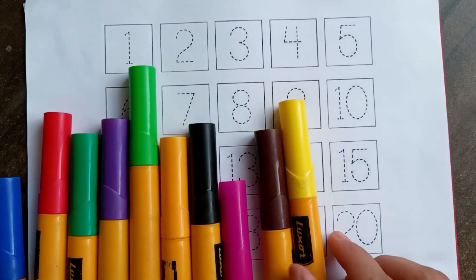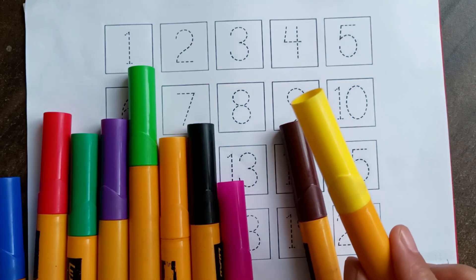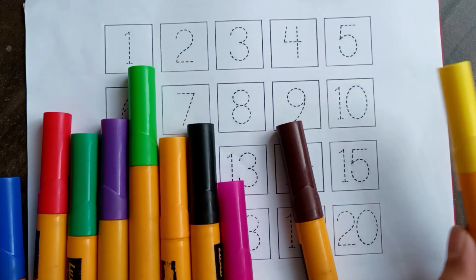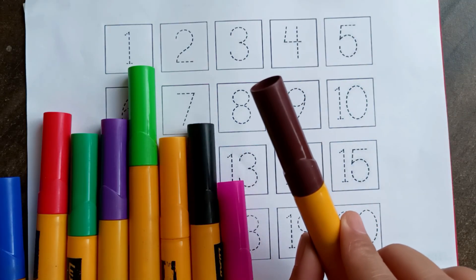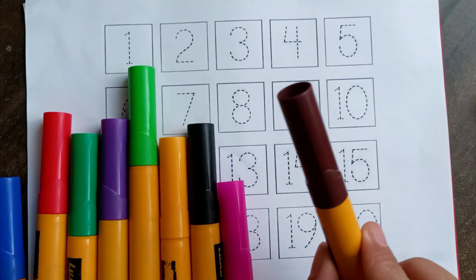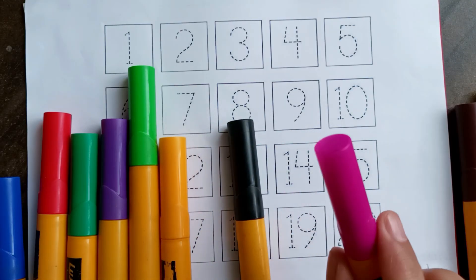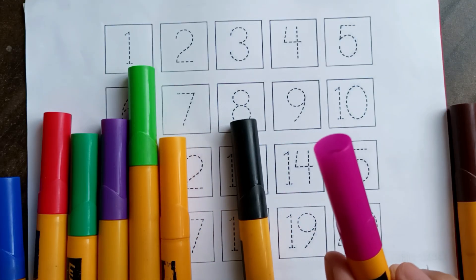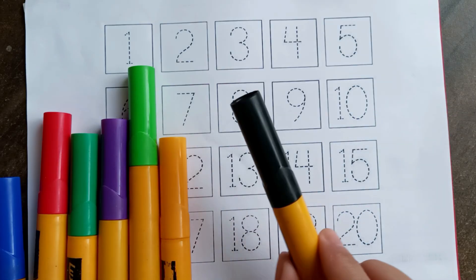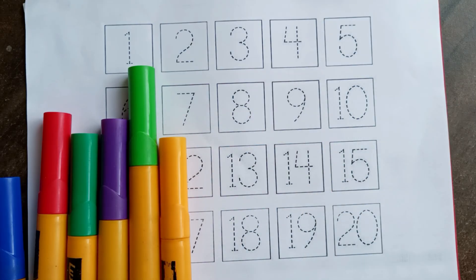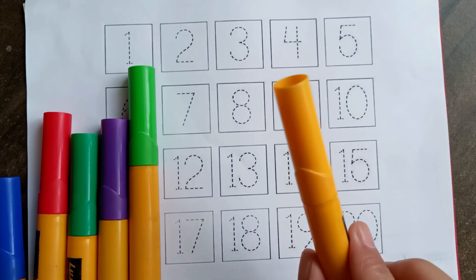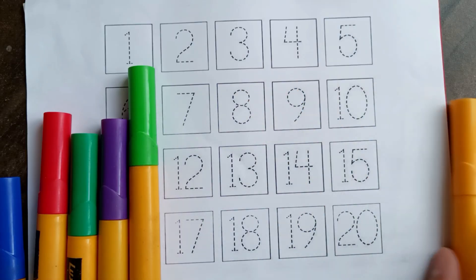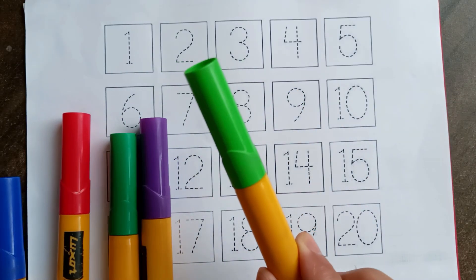Let's learn color and number. Yellow color, yellow color. Brown color, brown color. Pink color, pink color. Black color, black color. Orange color, orange color.